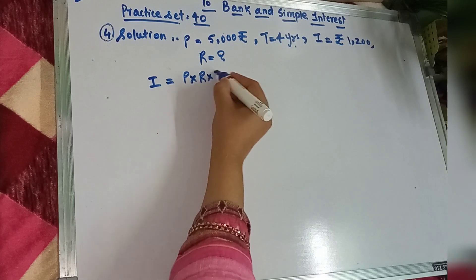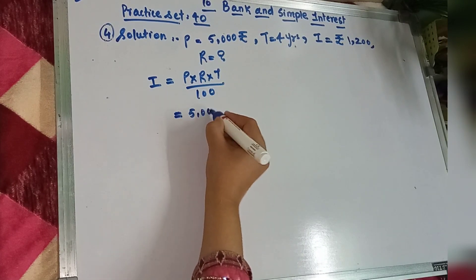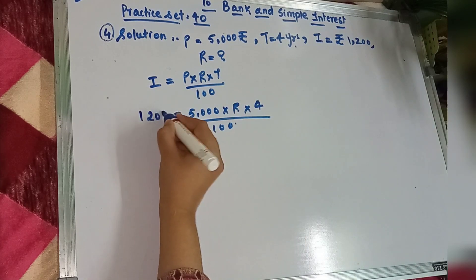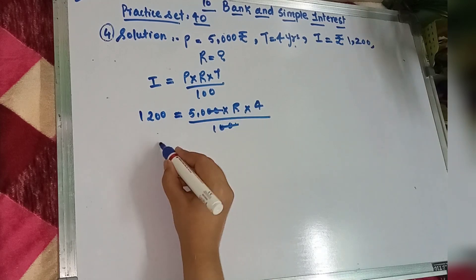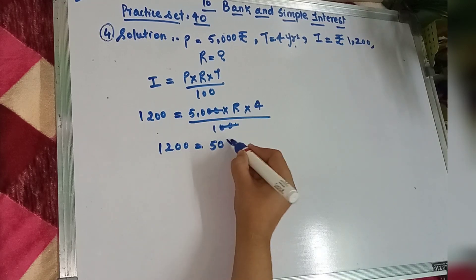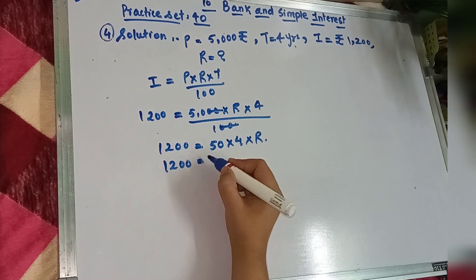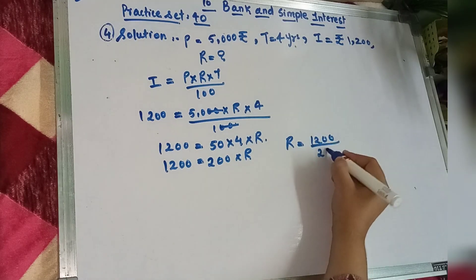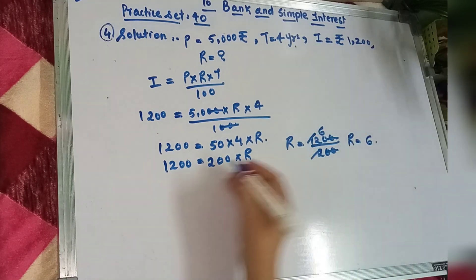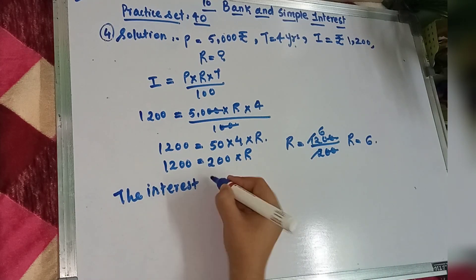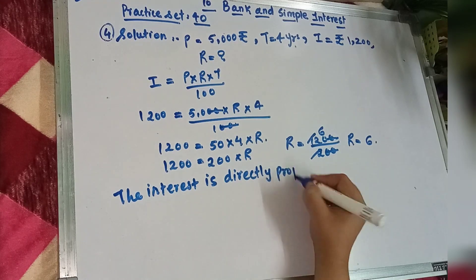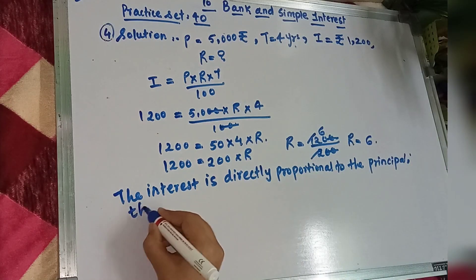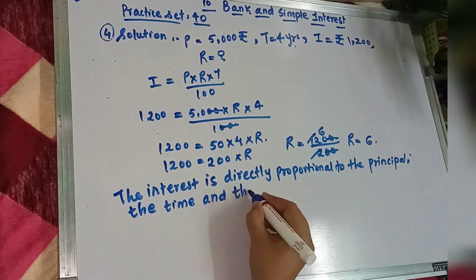So first hum wahi formula lagayenge. I is equal to PRT upon 100. P is 5000 and R ka value hum find out karna hai. So here your rate is 6.